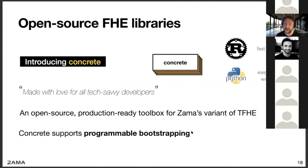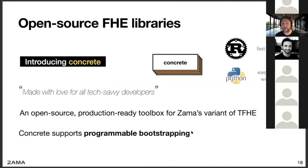What we're introducing today is a new library called Concrete, meant to simplify everything. It's made for tech-savvy people who aren't necessarily cryptographic experts. It is written in Rust so it's fast and reliable, and is meant to be production-ready, while also featuring a Python wrapper to make it simple and playful to use. It implements Zama's variant of TFHE, and includes the programmable bootstrapping operation I'll talk about shortly.